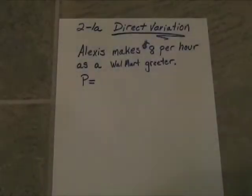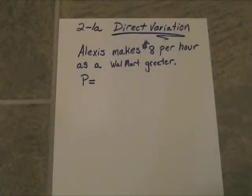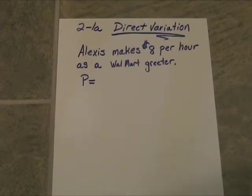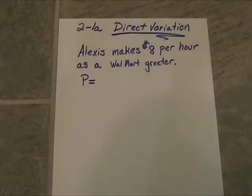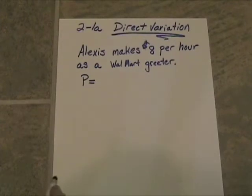Alright, let's take a look at something called direct variation. Alexis makes $8 per hour as a Walmart greeter. So the algebra to describe her pay is this.